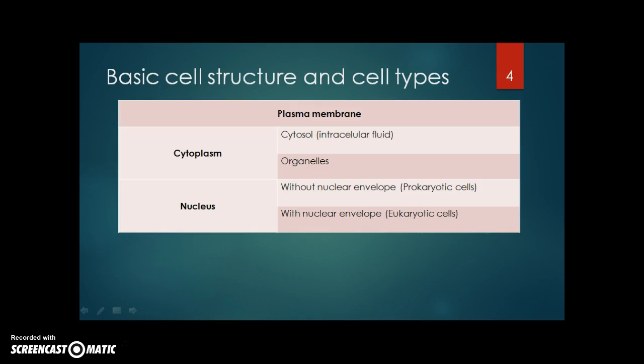And regarding the type of cells, into the cytoplasm can be differentiated different organelles also. And finally, one cell has also a nucleus. If the nucleus doesn't have a nuclear envelope, the cell is called prokaryotic. If the nucleus shows a nuclear envelope, it is called eukaryotic.